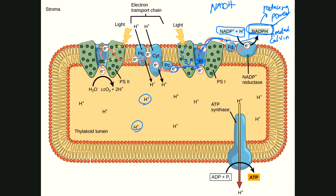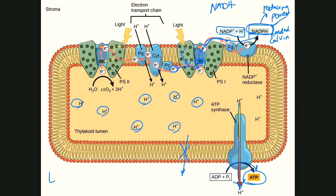The proton gradient built up in the thylakoid interior by the electron transport chain drives ATP synthesis — same mechanism as in cellular respiration. Protons flow through ATP synthase down their concentration gradient, turning that turnstile and allowing the enzyme to produce ATP. So the light reactions produce two things necessary for the Calvin cycle: NADPH (reducing power) and ATP.